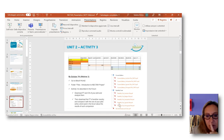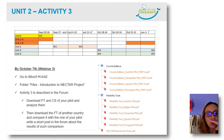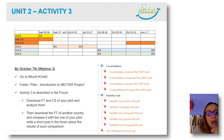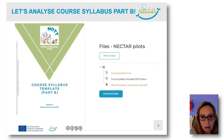I can share again the slide showing what was requested for Activity 3. You were asked to download the flexibility tool and course syllabus Part A of your pilot and analyze them. Then you were asked to download the flexibility tool of another country or pilot and post in the forum a comment about a possible comparison between the two flexibility tools. Since we have analyzed the flexibility tool and course syllabus Part A, let's see what course syllabus Part B is.